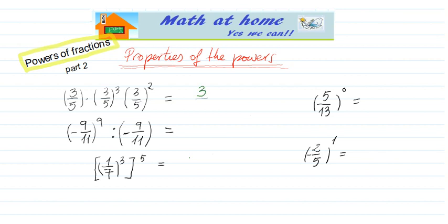We leave the same base and add the exponents, which is 1, 3, and 2. So 1 plus 3 is 4, plus 2 is 6. So we add the exponents and put the final exponent.